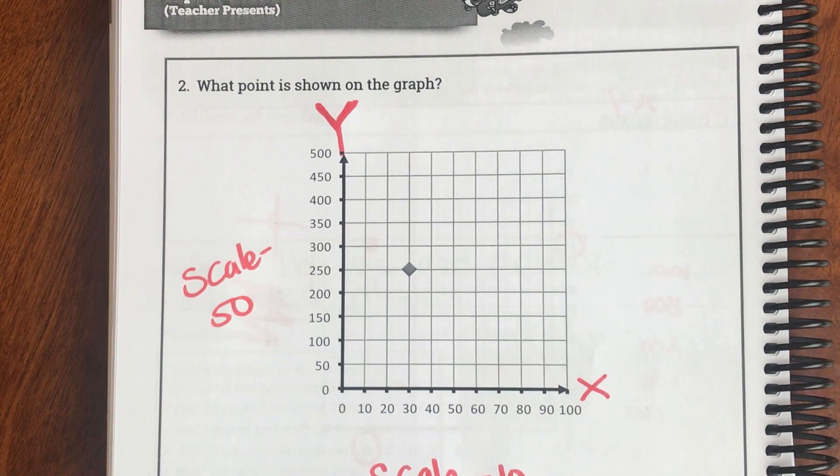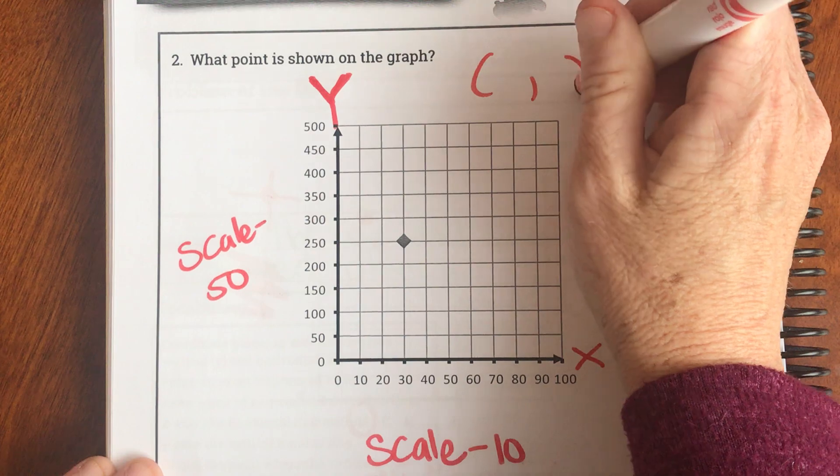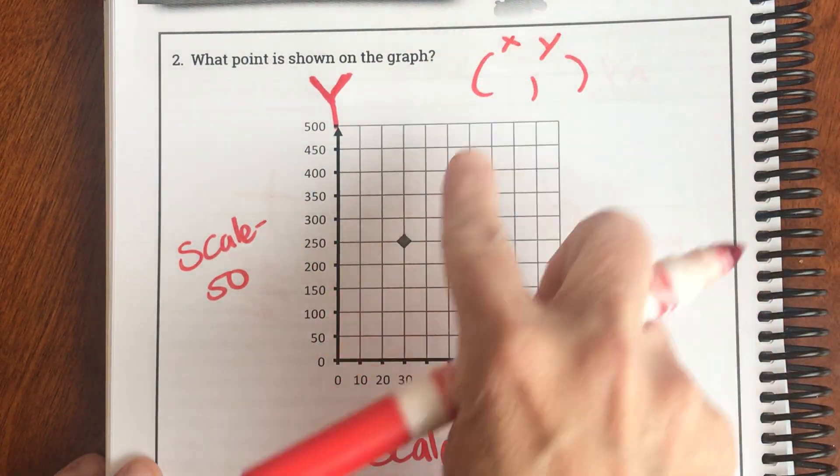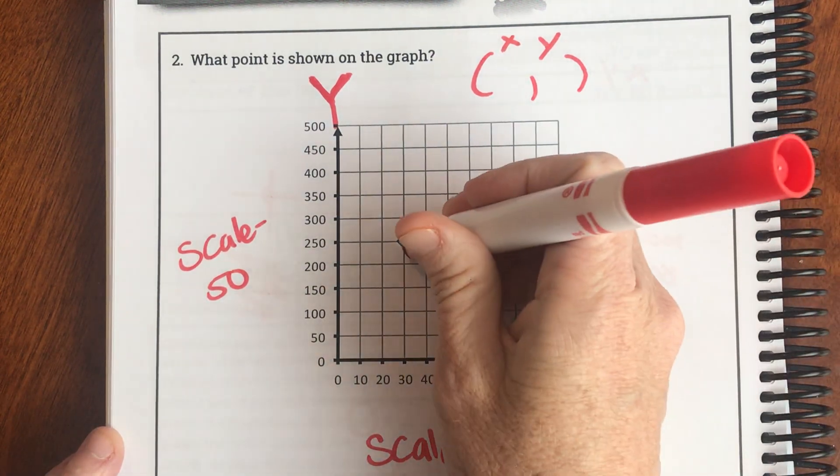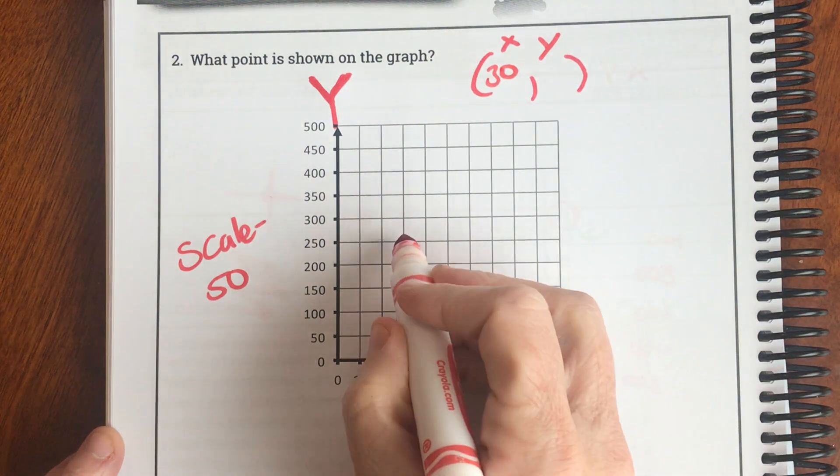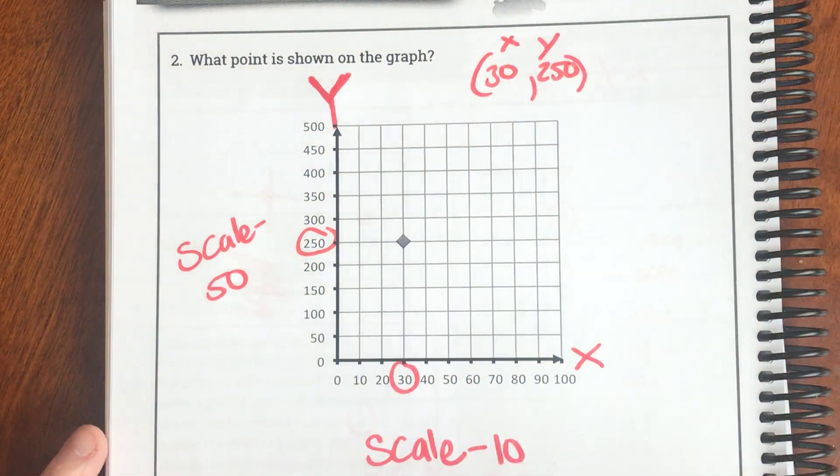But the question says, what point is shown on the graph? So I'm always going to set up my ordered pair with my x, y. So this is my ordered pair. And this is my coordinate point. So what is my x? My x is 30. And what's my y? 250.